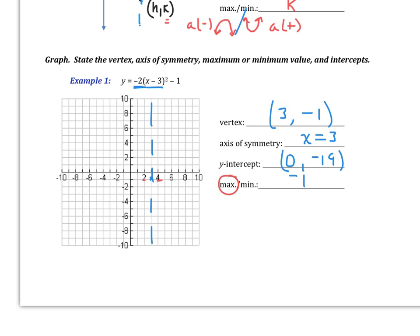So if I plug in 2, I get 2 minus 3 which is negative 1, squared is 1, times negative 2 is negative 2, and then minus 1 gives me negative 3. So I know at 2 I've got a point at negative 3, and therefore at 4 I also know it's going to be at negative 3. And if I want to plug in other points I can, but I have a general idea of what the graph looks like. It looks like a parabola that is going down like this.